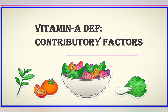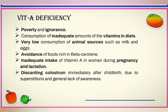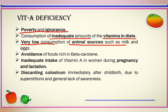Let's look at some contributing factors of vitamin A deficiency. Poverty and ignorance are major factors. The community consumes inadequate amounts of vitamins in their diet, and there is very low consumption of animal sources like milk and eggs. Low consumption of foods rich in beta-carotene is also a major cause of vitamin A deficiency.